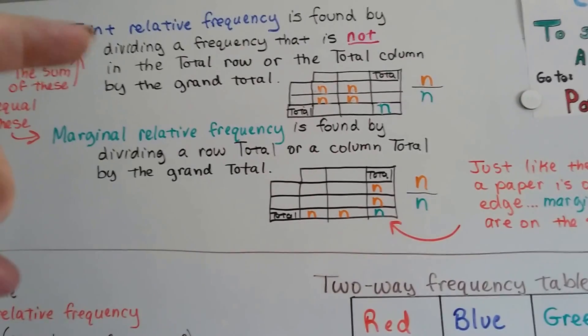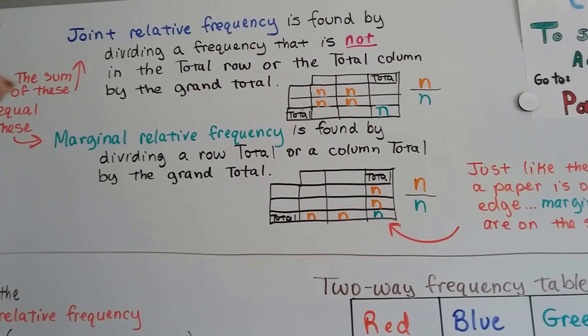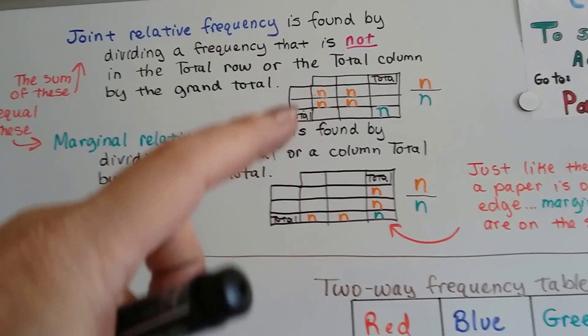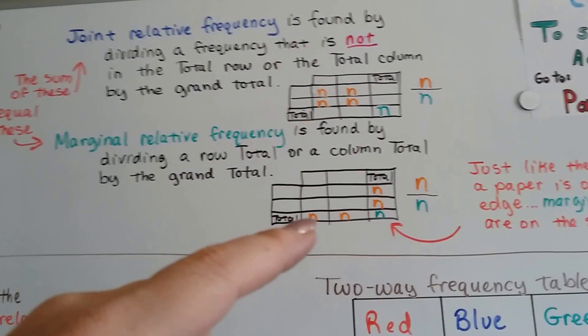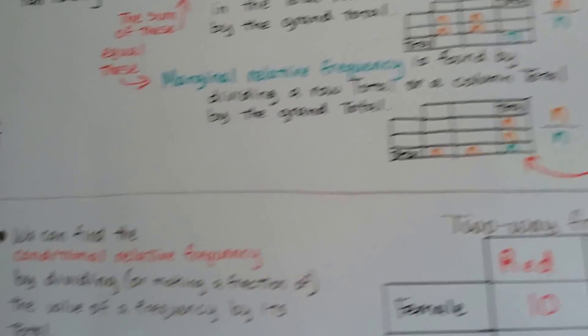And when you add up these joint relative frequencies, their sum is equal to these. If I added these two, it would equal that, because that's the total column, isn't it? All right.